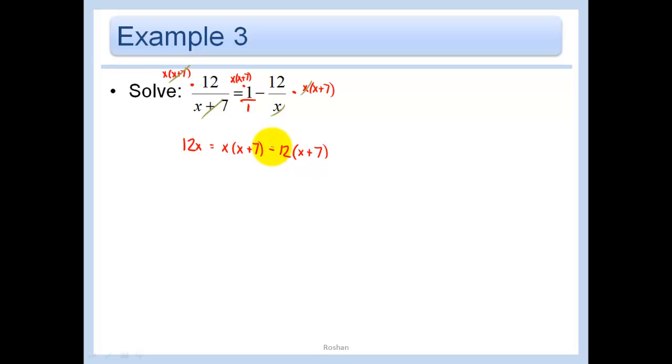Don't forget your parentheses because we need to distribute that negative 12. So we get 12x equals x squared plus 7x minus 12x minus 84. Let's just put everything over on one side. 0 equals x squared. Let's see, 7 minus 12 minus 12 minus another 12 is going to be minus 17x minus 84. And then let's factor this down. x and x. What is 84? 21 and 4. Yeah, that's going to work.